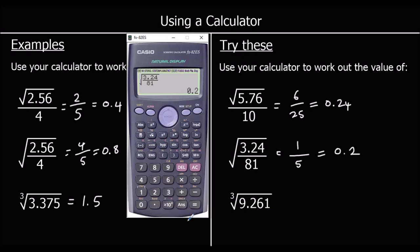For the third one, it's a cube root. So we can use our any root button: 3 in the first box, and we've got 9.261 inside the root. And that's 21 over 10, or as a decimal, 2.1.